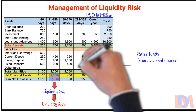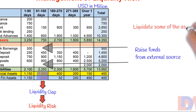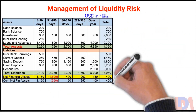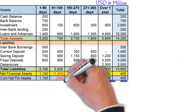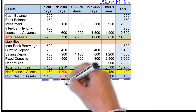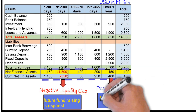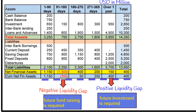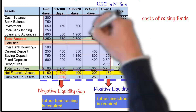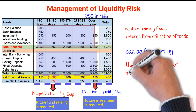The bank will have to either raise funds from an external source before the end of the period or try to liquidate some of the assets falling under the next bucket. Liquidity gap analysis helps a bank to manage liquidity risk as well as to plan for future investment. A negative liquidity gap means future fund raising is required, whilst a positive gap means future investment is required. The costs of raising funds and returns from utilization of funds can be forecast by the term structure of assets and liabilities of a bank.